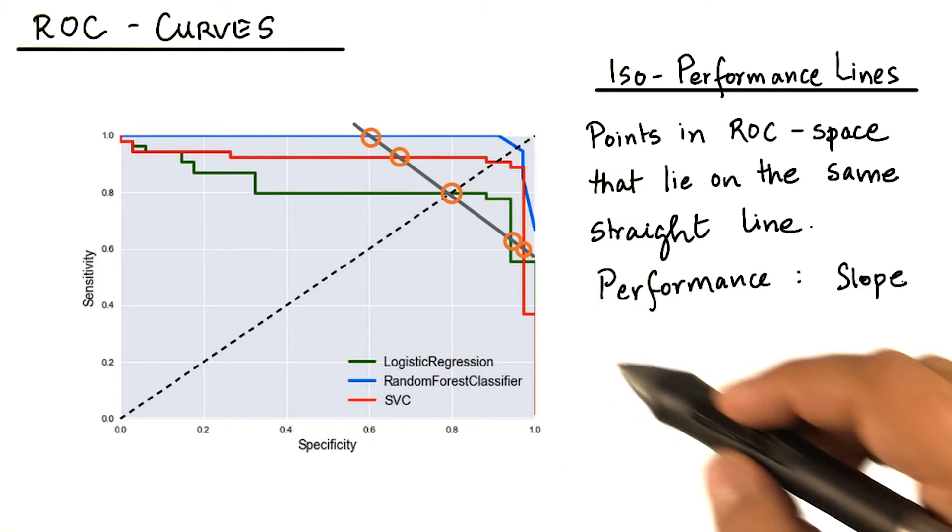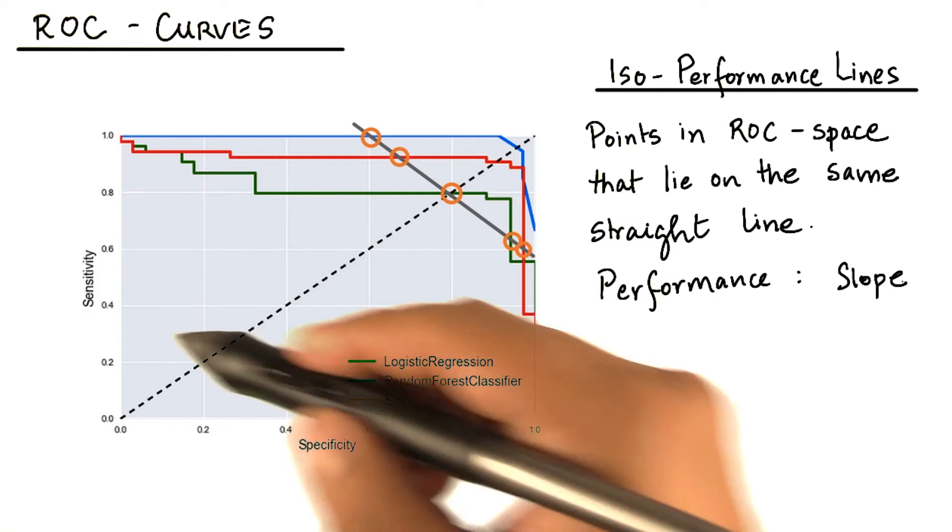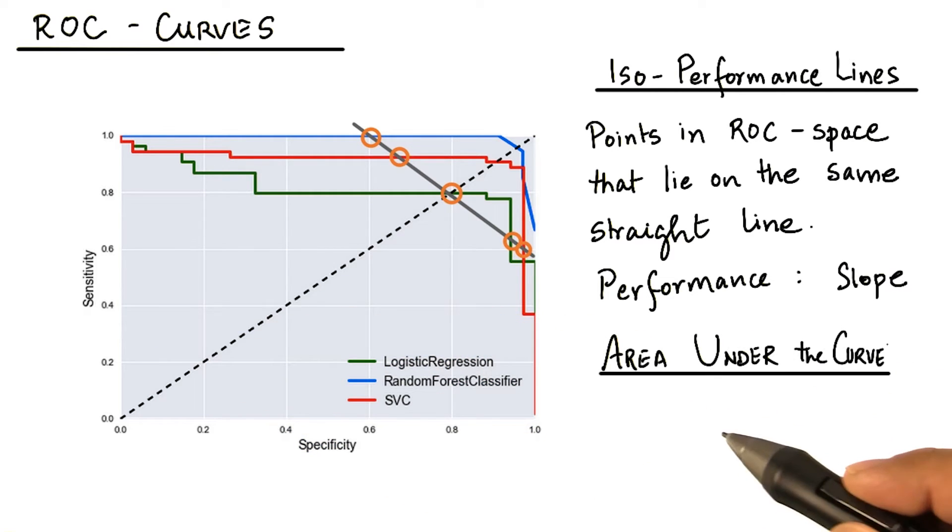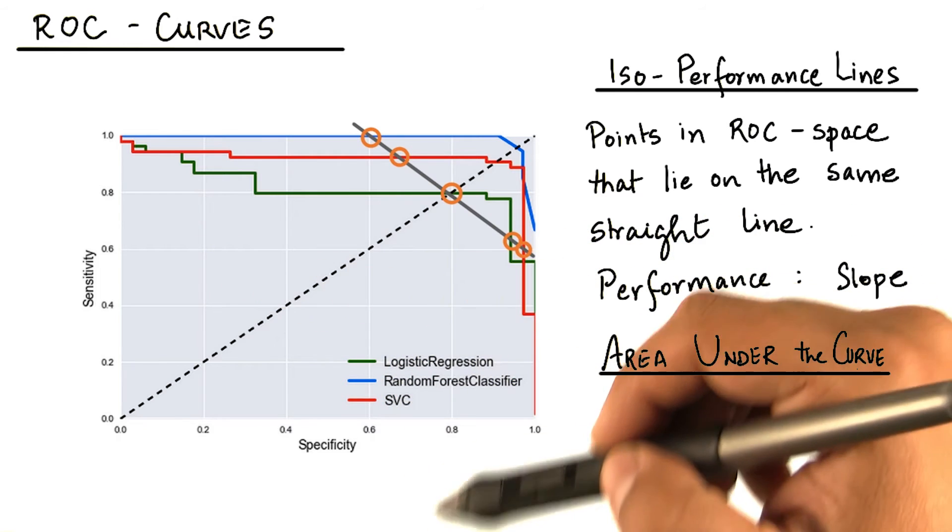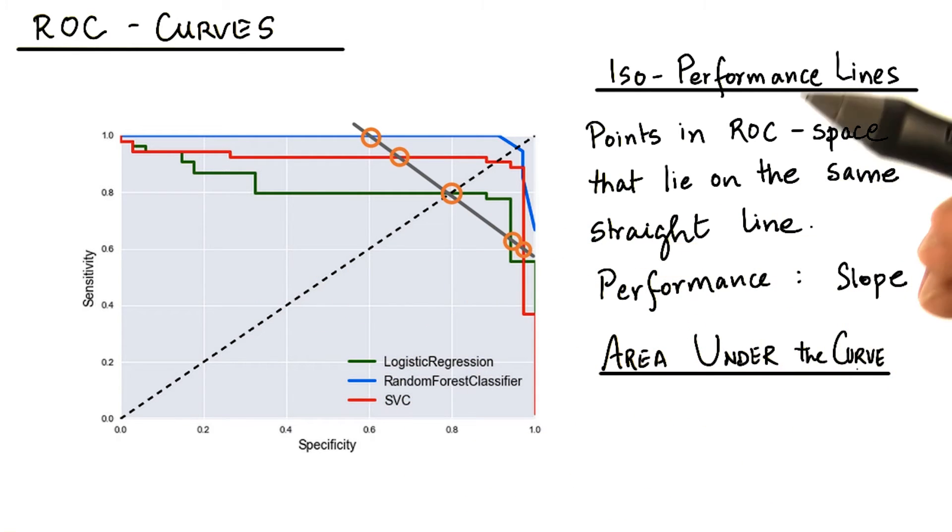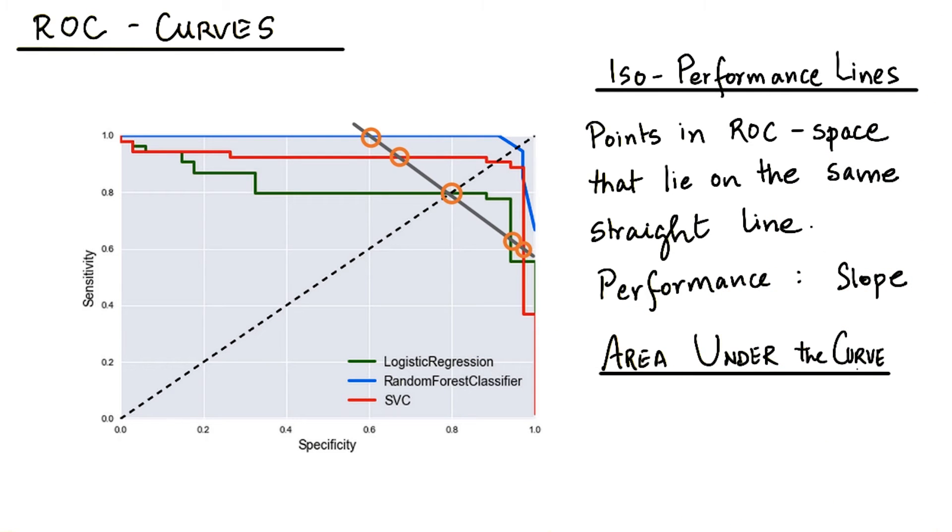Another important concept is the concept of the area under the curve. An ROC curve with a larger area under it performs better on average than an ROC curve that has a smaller area.